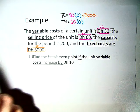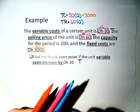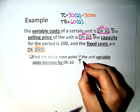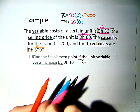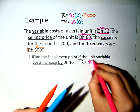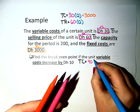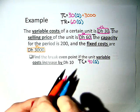So now, if the unit variable costs increased by 10 dirhams, then the total cost would be 40Q plus 3,000.